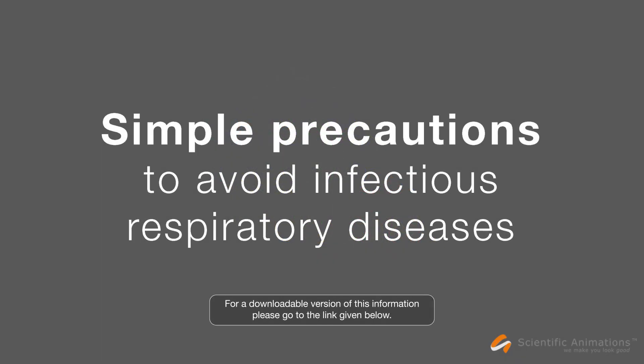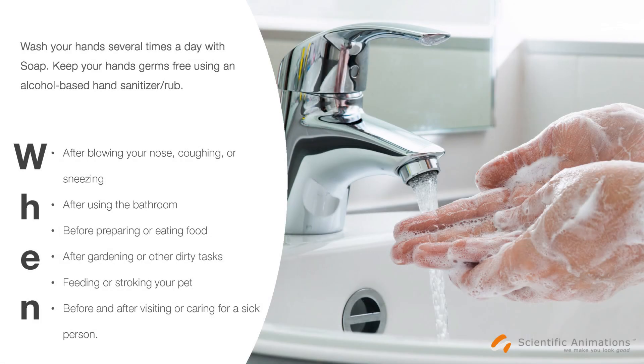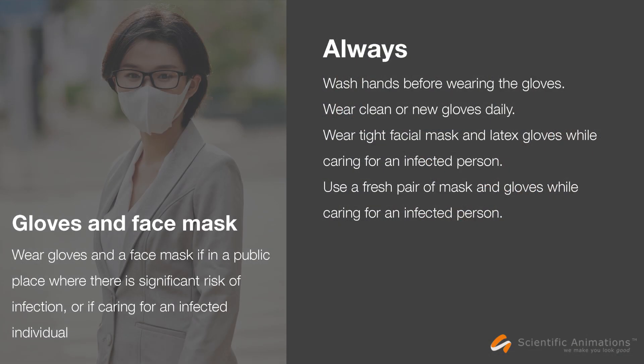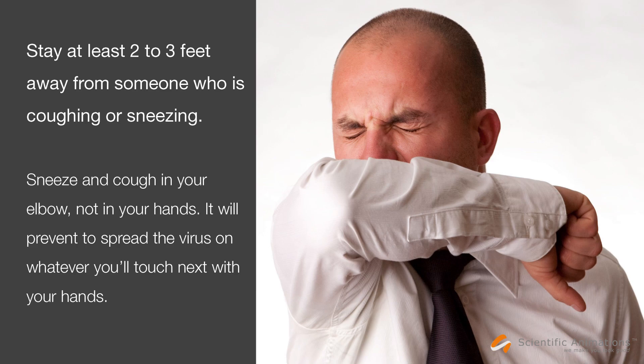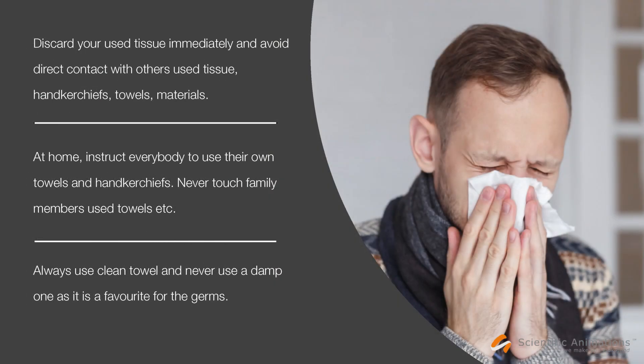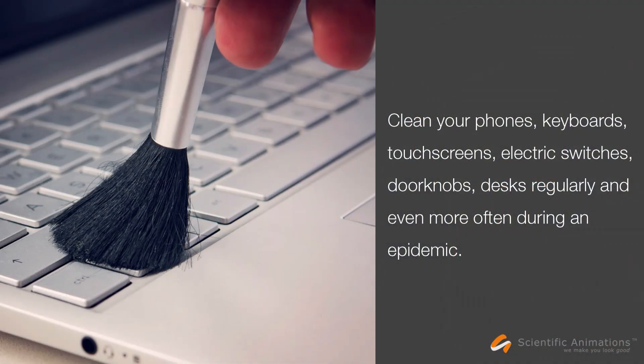There is currently no cure or vaccine for the 2019 novel coronavirus, and treatment is only supportive. Therefore, preventing transmission is paramount. As an airborne virus, recommended precautions are similar to those for preventing the flu. This includes washing hands regularly with soap and water for 20 seconds, covering sneezes and coughs with the inside of the elbow, and refraining from touching high-contact surfaces like railings and doorknobs.